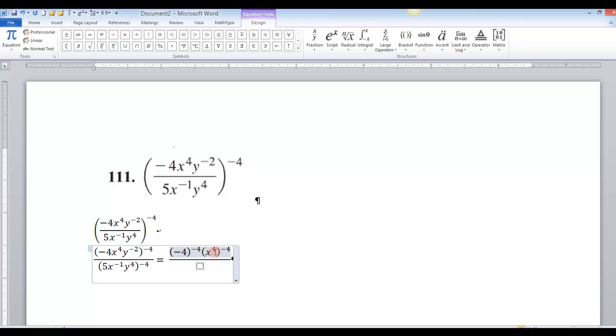And I've got a y to the negative 2. Need a parenthesis there. Oops, but I forgot the carat there. Y to the negative 2. And that's all raised to the negative 4th power. And you can see how this works.